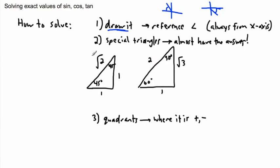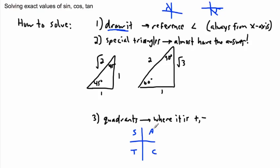This will help you get answers like 1 over root 2, or root 3 over 2, and so on. You just use sine, cosine, or tangent — use your SOH-CAH-TOA to know what to do. And then I check for quadrants, meaning I check which quadrant the angle is in.